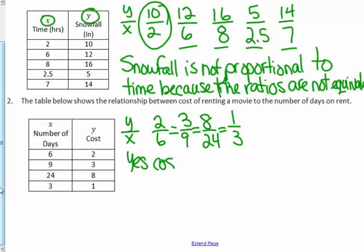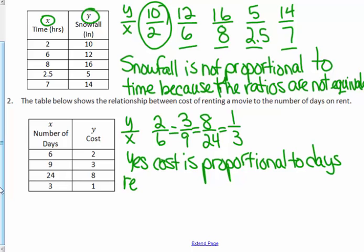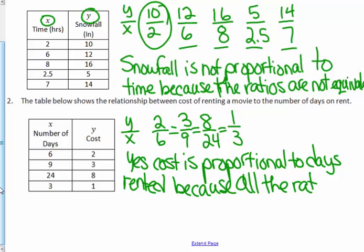So yes, cost is proportional. Cost is proportional to days rented because all the ratios are equivalent. They are equivalent. They are equal in measure. That's what the word equivalent means. They are all the same. They are all equal. They all equal 1 to 3, a ratio of 1 to 3.